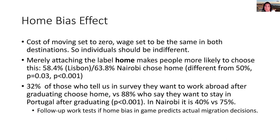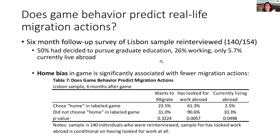On the correlation between lab behavior and real-world migration: a follow-up survey with the Lisbon sample found that subjects who displayed home bias in the game were significantly associated with fewer migration actions — they looked less for work abroad and were less likely to have gone abroad — though the sample is small. This suggests lab game behavior is correlated with real-life migration decisions.